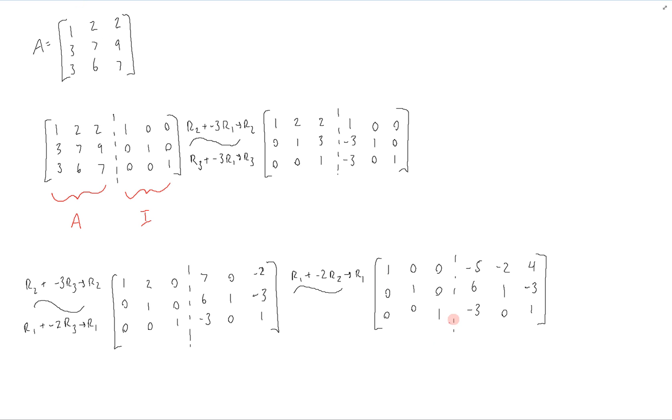Where we have now reduced the matrix on the left, or matrix A, to the identity matrix. And the identity matrix on the right has been reduced to the inverse of A.